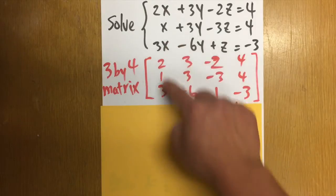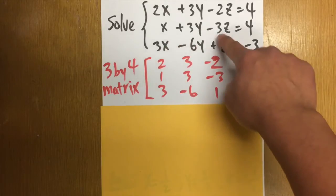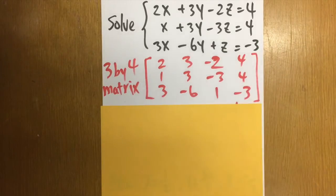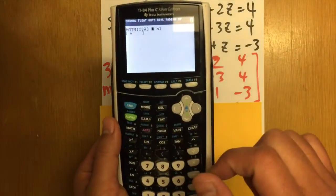And for the last row, we have 3, negative 6. And once again, the coefficient of z is 1. And then we have negative 3. This is a 3x4 matrix. And this is the one that we have to enter onto matrix A.